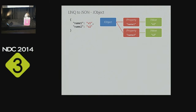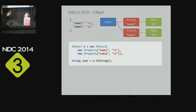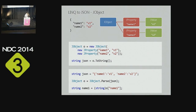JObject works similarly. A JProperty has a name and a value. To create a JObject, pass a collection of JProperties — as a params array, a list, or a LINQ query result. Call ToString() for the JSON, or JObject.Parse() to go the other way. JObject implements IDictionary<string, JToken>, so you access values using the dictionary indexer and cast to your desired type.